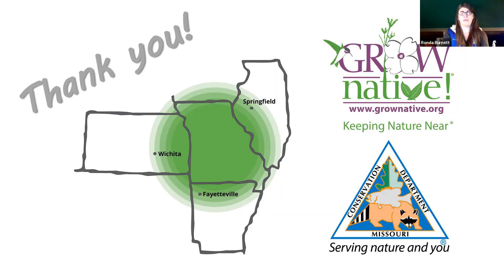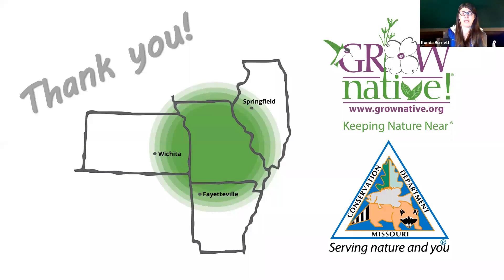Viewing leaf litter as mulch — a covering throughout the dormant season — rather than something on your maintenance checklist to remove is fantastic, because we know there are a lot of insects and small wildlife that will use that leaf litter to overwinter. They'll bury under the leaf litter. Many species of butterflies and moths, and even small bats in forest systems, will crawl underneath that leaf litter to stay warm. Living mulches are probably the best mulch option if you can get your project to that place.